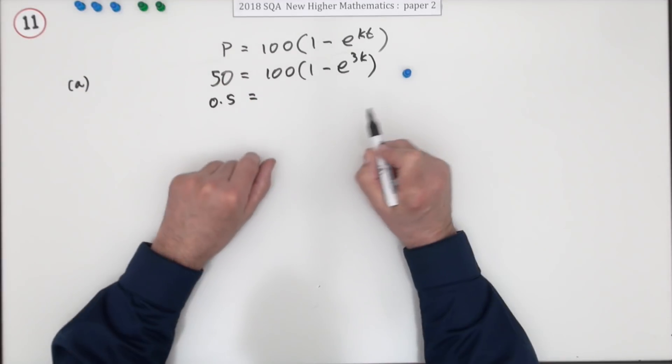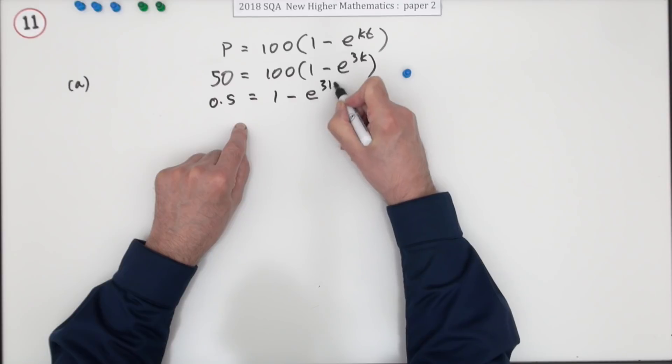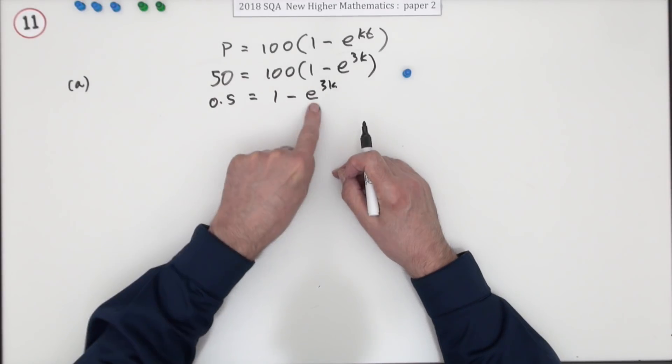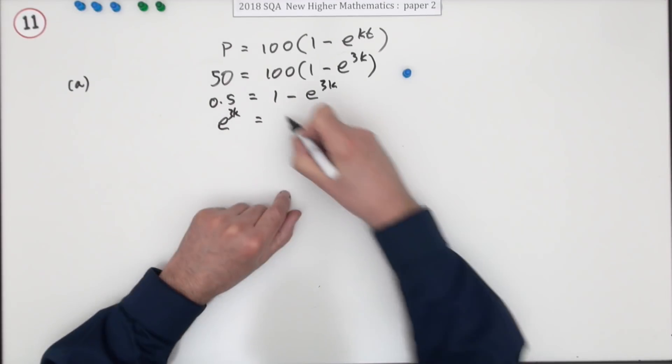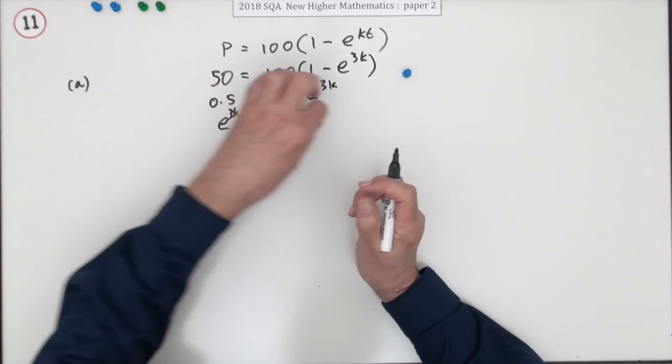And that'll be a half, but you're better off putting it as a decimal because you know in the end you'll be using logs and so on, it won't work out nicely. It's equal to 1 minus e to the 3k. Now you're not going to come out for every single stage now. Bring that over so it's nice and positive, so e to the 3k will be 1 minus 0.5, which is still 0.5. That gets you the next mark.